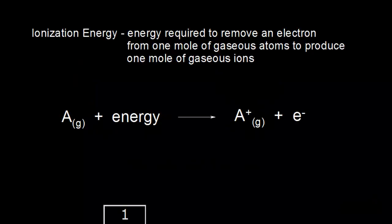Ionization energy refers to the energy required to remove an electron from a neutral atom. Here, A represents a neutral atom, meaning equal numbers of protons and electrons. Since the positively charged nucleus attracts those negatively charged electrons, it takes energy to pull an electron away from that attractive force of the nucleus. That's your ionization energy.